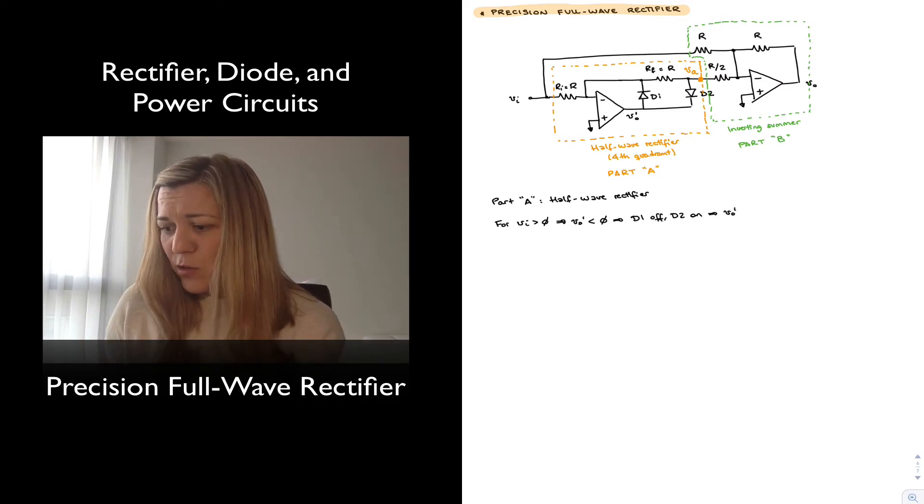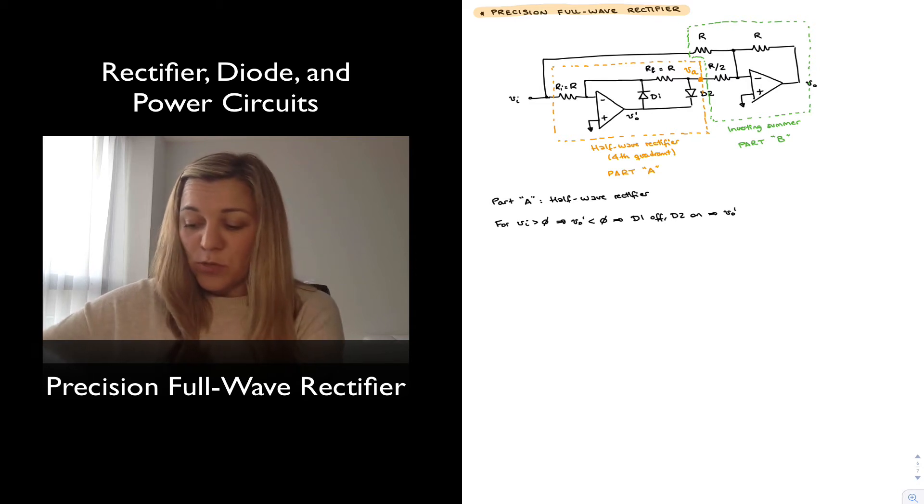Which means that Vout prime is going to set its value to whatever it needs to be to make sure that both input terminals are sitting at about the same voltage. Again, D1 we can assume is not there, since it's reverse biased. And so the negative feedback loop is closed through diode D2 and resistor R.